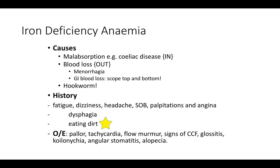Iron deficiency anemia is not a diagnosis in itself — it is caused by something else. It can be related to malabsorption such as in celiac disease, or blood loss. In a young woman we'd ask about menorrhagia; in an elderly male we'd consider a gastrointestinal cancer and therefore an urgent endoscopy or colonoscopy. In the developing world hookworm is also a cause. Pica syndrome, where children eat dirt or clay, is also a cause of iron deficiency anemia.